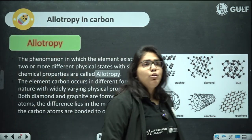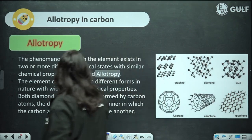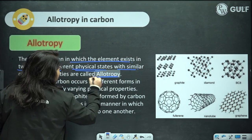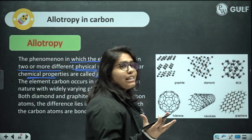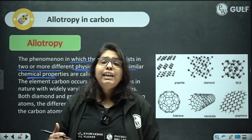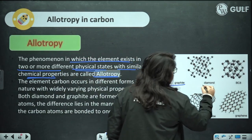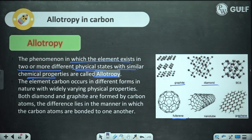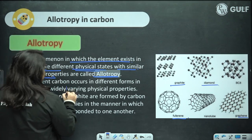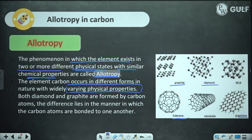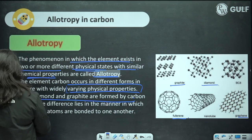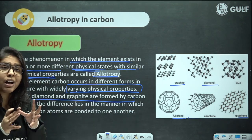The term allotropy refers to the phenomenon in which an element exists in two or more different physical states with similar chemical properties. Carbon is present as graphite, diamond, fullerene, graphene, etc. We are going to discuss graphite, fullerene, and diamond. The element carbon occurs in different forms in nature with widely varying physical properties — chemically they are the same because it is the same element. Both diamond and graphite are formed by carbon atoms; the difference lies in the manner in which these carbon atoms are arranged.